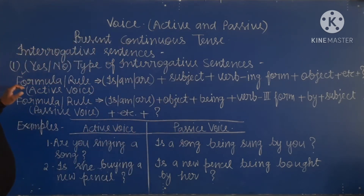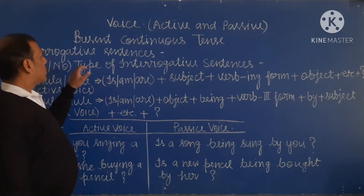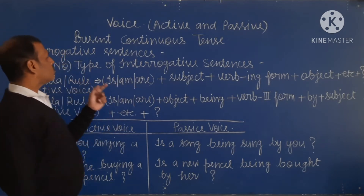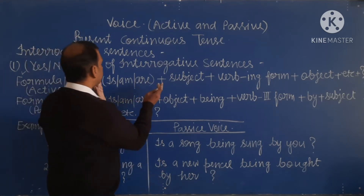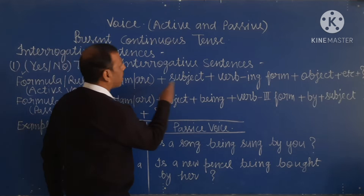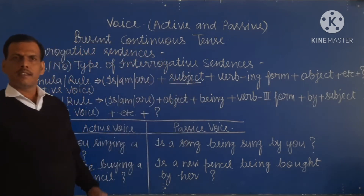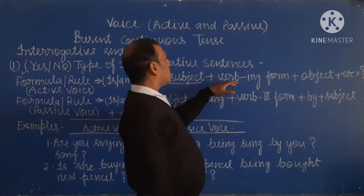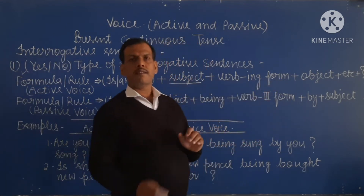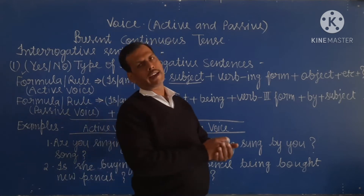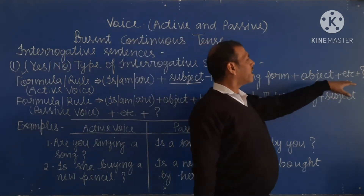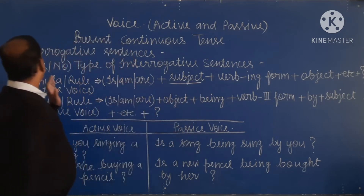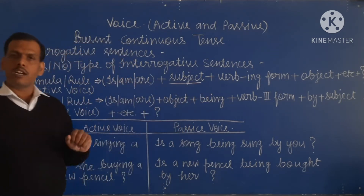Here is the formula for the yes-no type of interrogative sentence. First, we write 'is' or 'are' according to the subject. Then the verb in ING form — that means we add ING to the first form of the verb. Then the object and etc., and at last a question mark. This is the formation of the yes-no type of interrogative sentence.